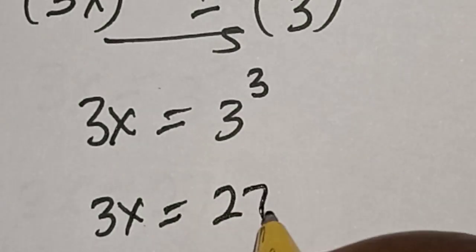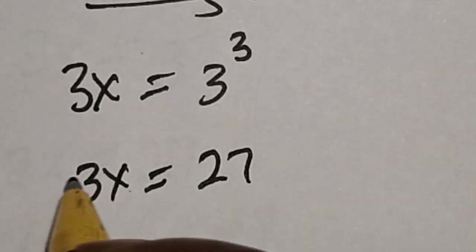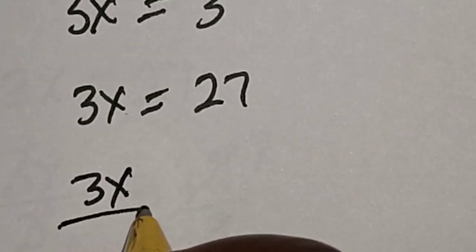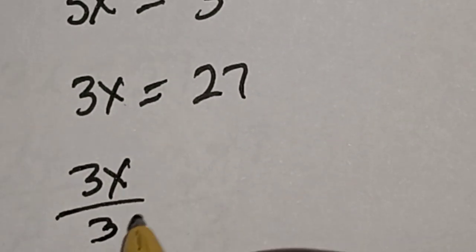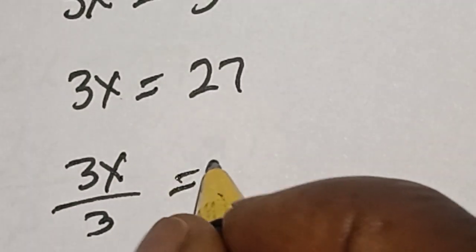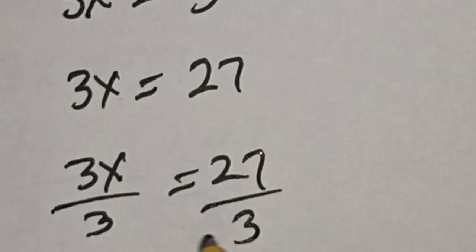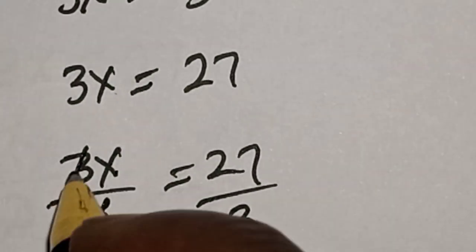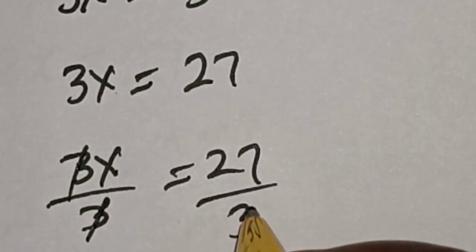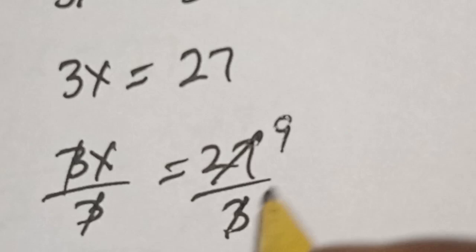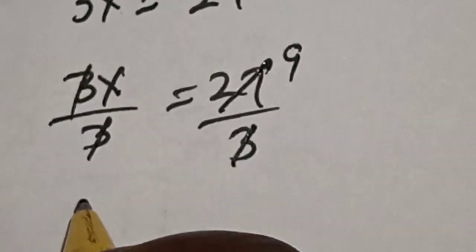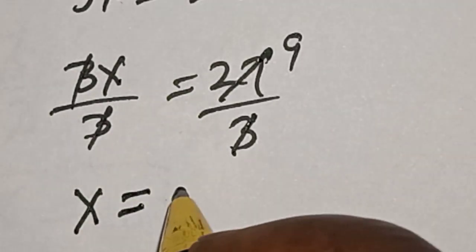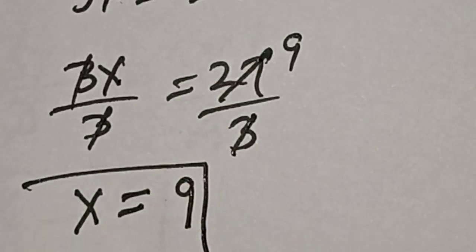Now 3s equals 3 raised to power 3, which is 27. Let's divide both sides by 3: 3s divided by 3 equals 27 divided by 3. Cancelling the 3s, we get s is equal to 9. That is our answer.